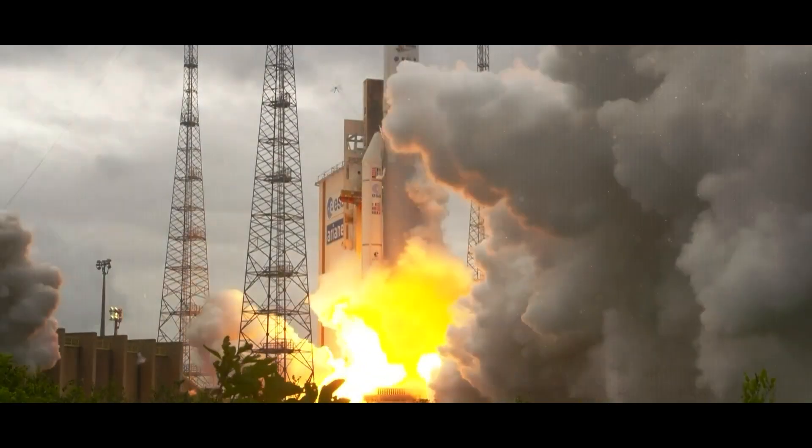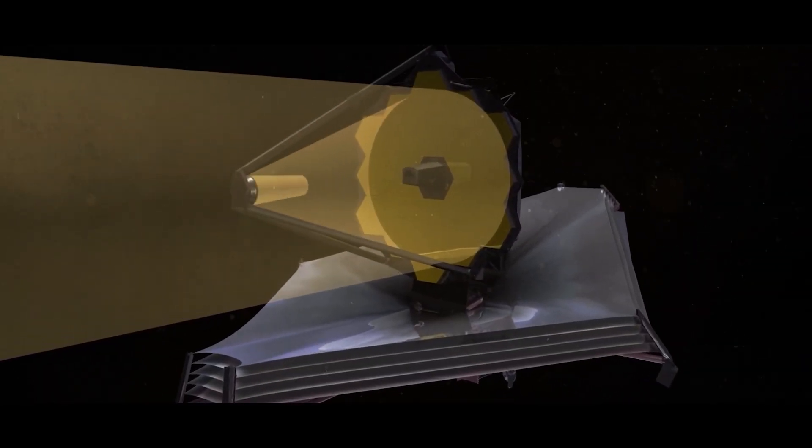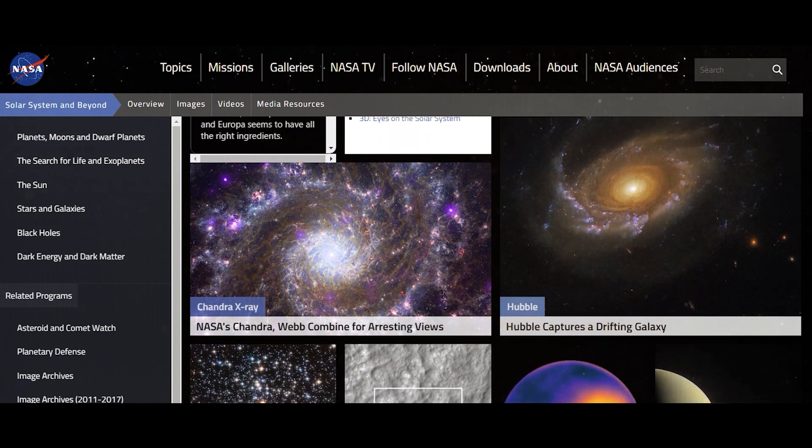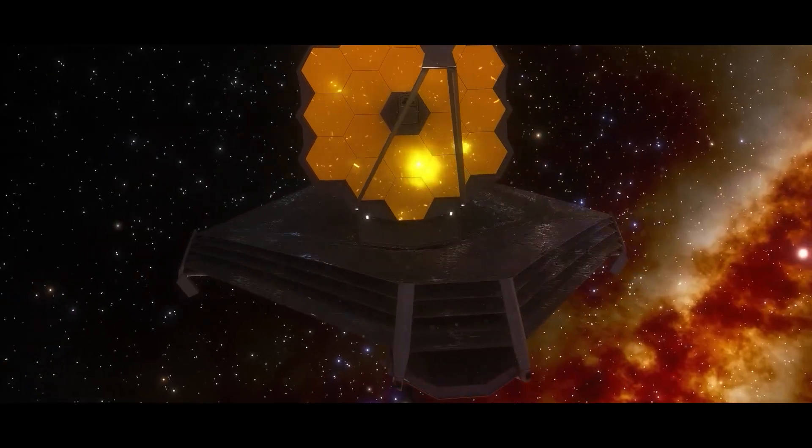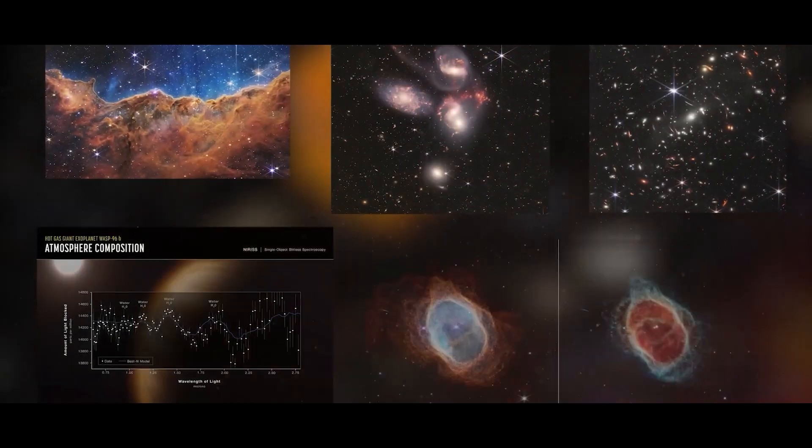Ever since the telescope was launched into space in September 2021, it sent back some really exciting data. NASA has released a bunch of images on their website taken by the James Webb Space Telescope for people to download and study.